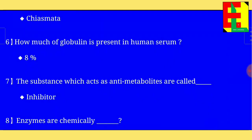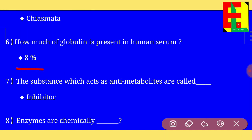Question number six: how much globulin is present in human serum? The answer is 8% of globulin is present in human serum. Question number seven: the substances which act as anti-metabolites are called inhibitors.